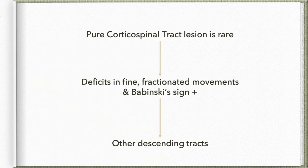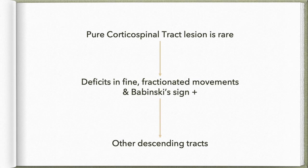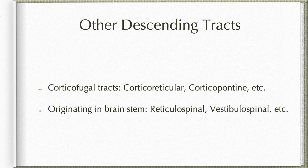Pure corticospinal tract lesion is rare in human beings because it is surrounded by so many other tracts traveling in the same path. If you can experimentally create a lesion of the pure corticospinal tract alone, it will result only in deficits in fine fractionated movement and a positive Babinski sign. All other signs listed under UMN lesion are actually due to involvement of surrounding descending tracts.